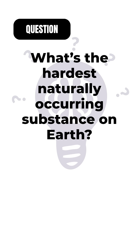What's the hardest naturally occurring substance on Earth? Diamond — a crystalline form of carbon — is the hardest natural material known.